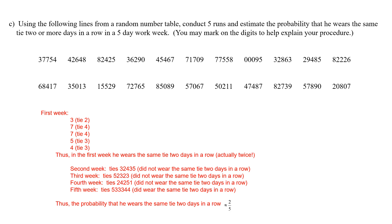It only asked us to conduct 5 runs to estimate the probability. But in reality, you would want to go through at least 100 runs to really be able to estimate the probability that he wears the same tie two or more days in a row in a five-day workweek.